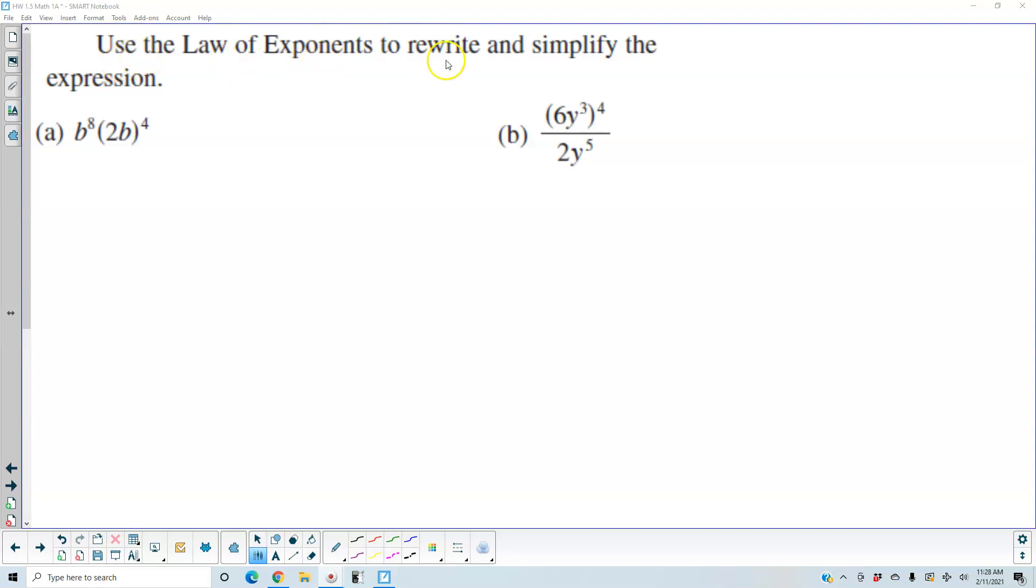We're using the law of exponents to rewrite and simplify the expression. We have b to the eighth power times 2b to the fourth power. So the first thing we need to do is apply the exponent for 2, the base of 2b. This becomes b times 2 to the fourth times b to the fourth.